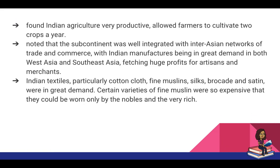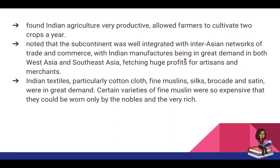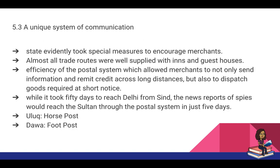Ibn Battuta also talked about Indian agriculture, which he thought was extremely productive given the fertility of the land — farmers actually cultivated two crops a year. He notes that the subcontinent was integrated with the international network of trade and commerce, with Indian manufactures in great demand in both West Asia and Southeast Asia, fetching huge profits for artisans and merchants. He talked about the variety of Indian textiles — fine muslin, silks, brocades, and satins were in great demand worldwide. Some varieties of fine muslin were so expensive they could only be worn by nobles and the very rich.